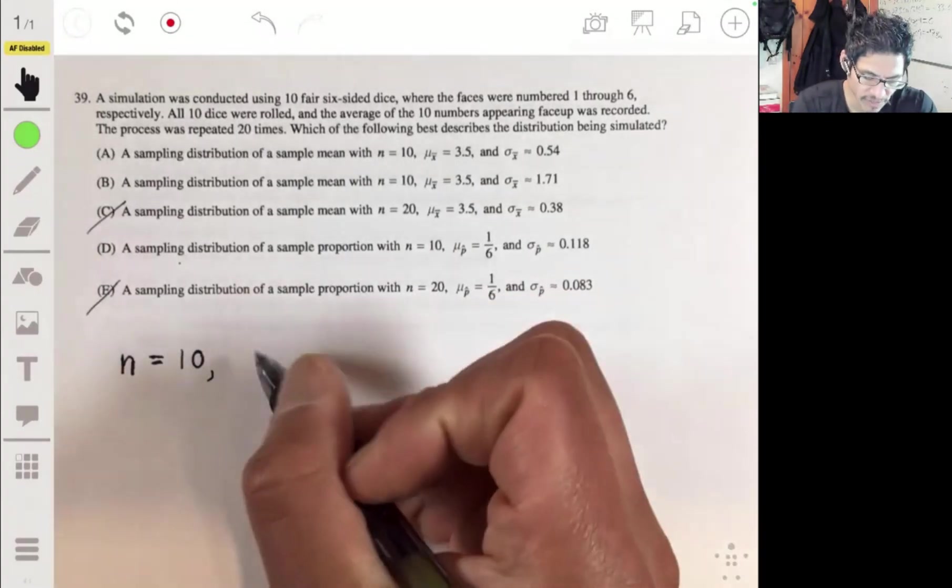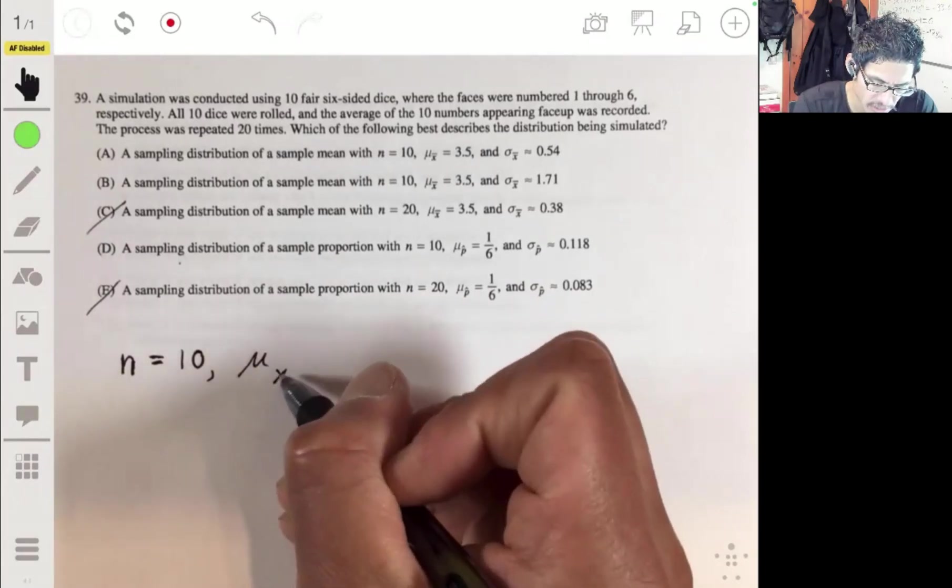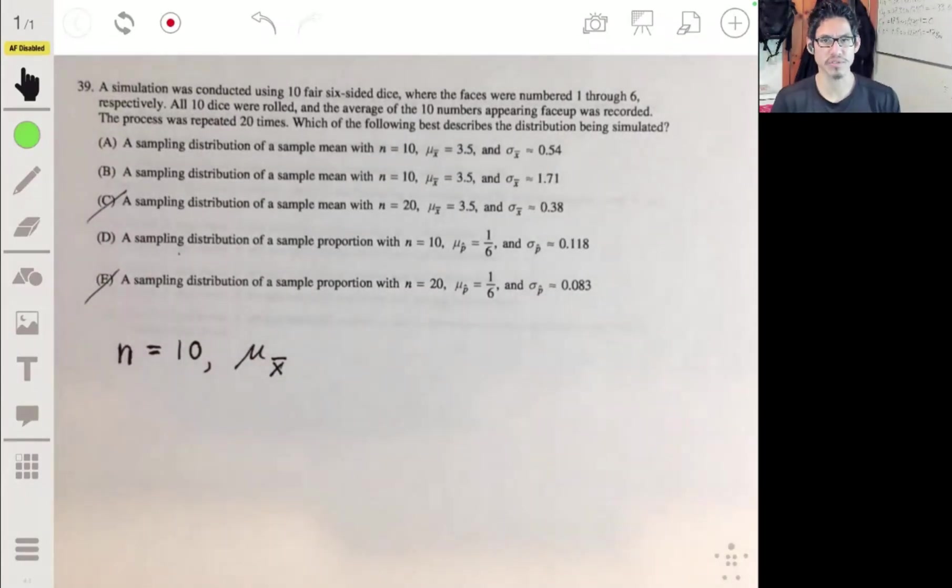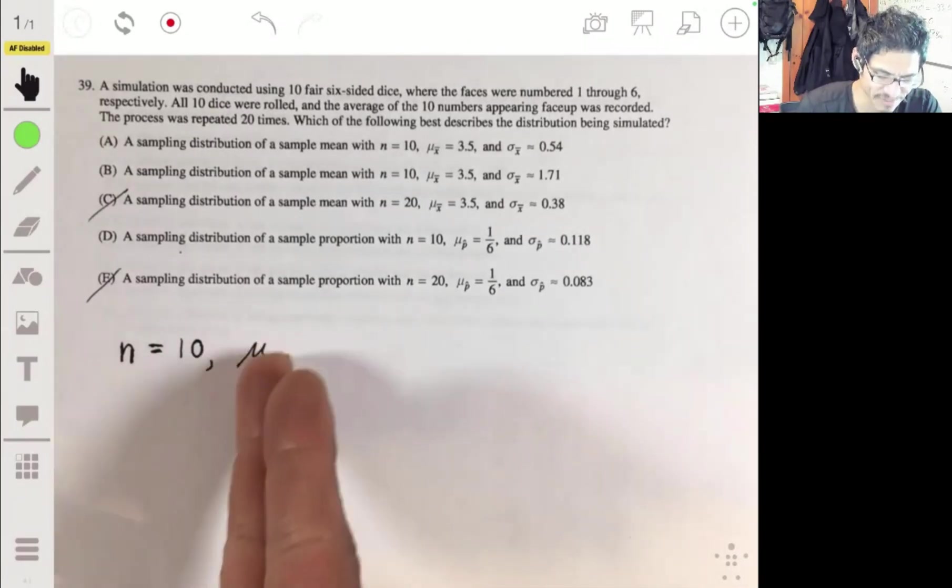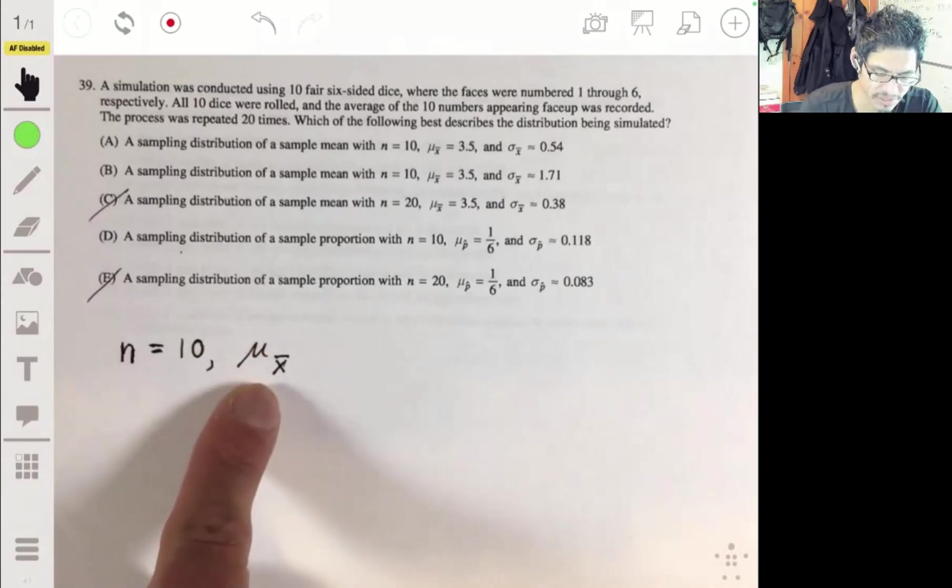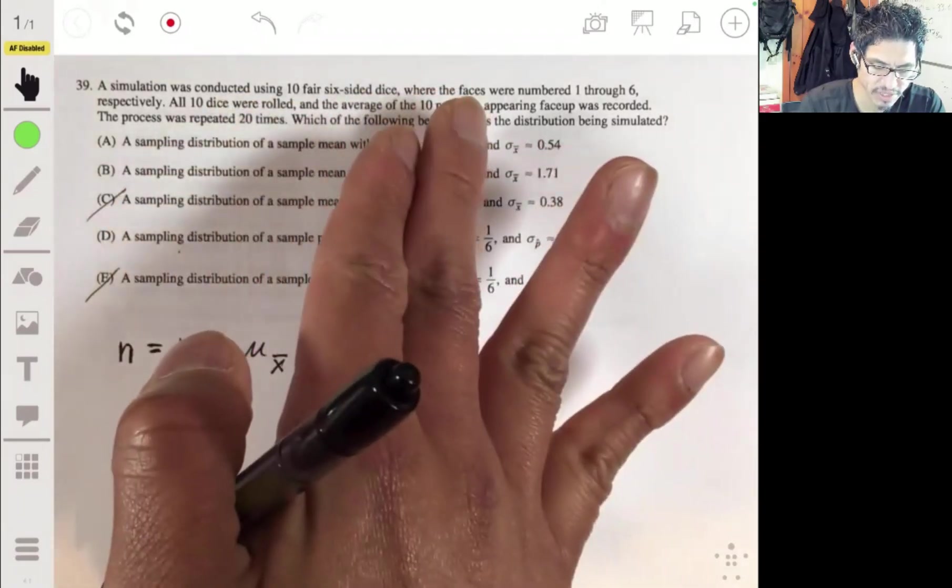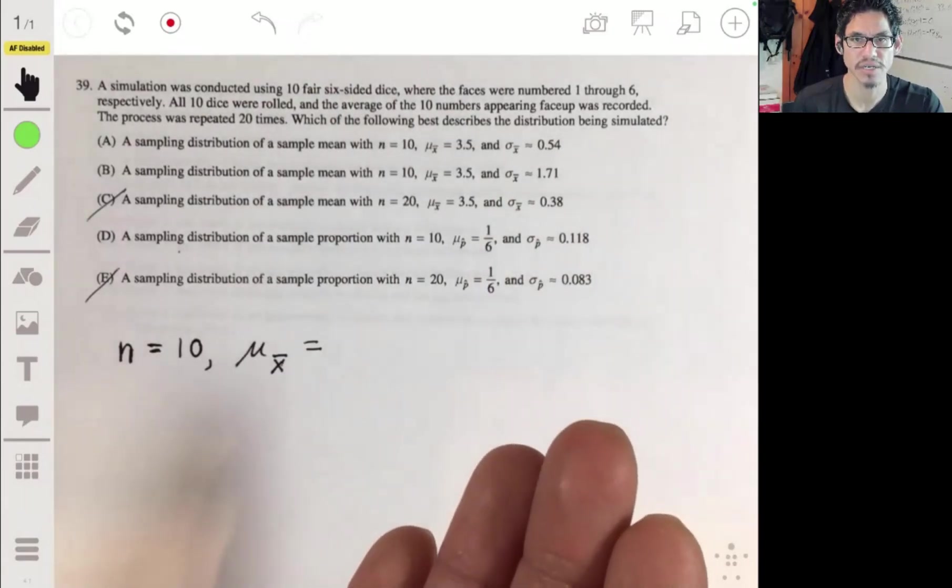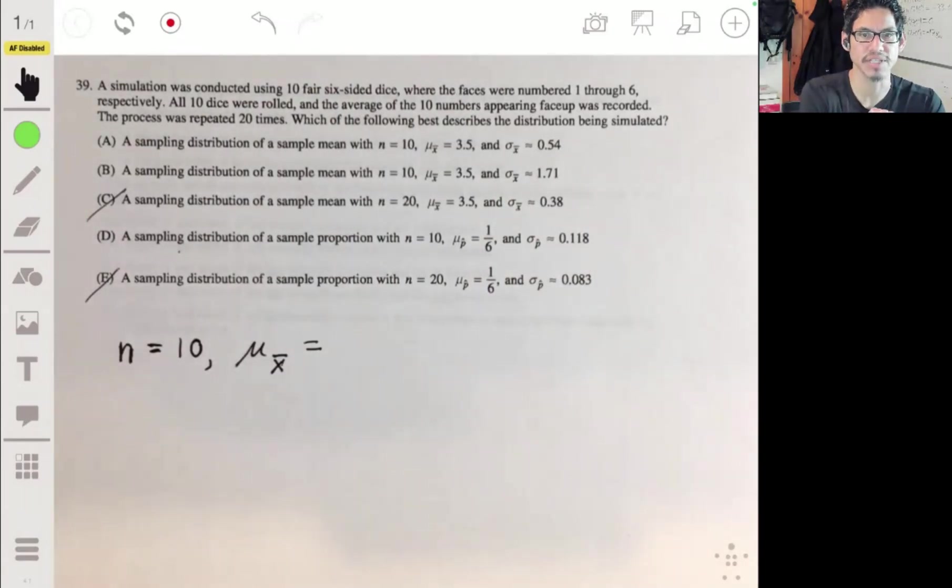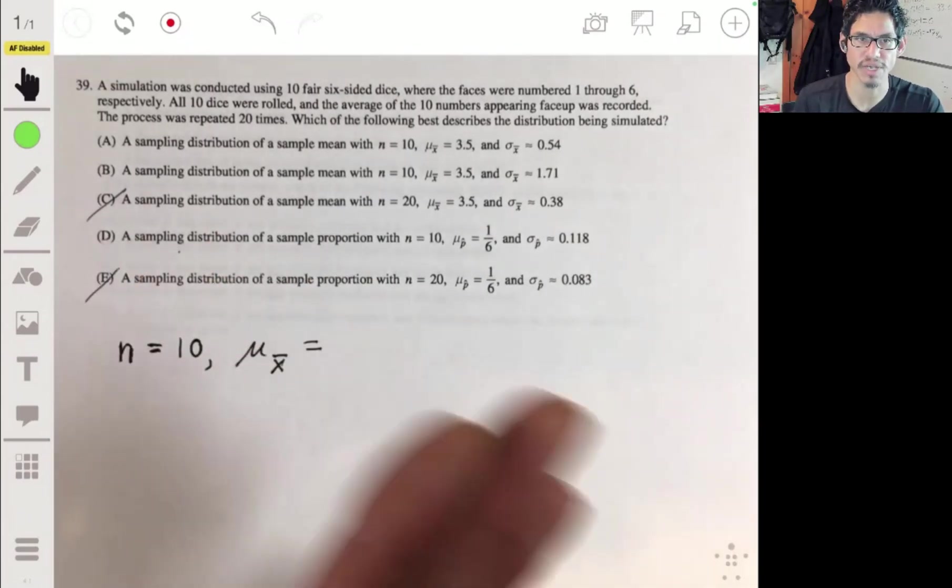We're going to then find the mean of those 10 dice in each of those trials. If you remember from this unit, the mean is an unbiased estimator. This mean is also going to be equal to the population mean. What this is representing is the mean of the sampling distribution of X bar. All we have to do is take the average of 10 dice. That's going to be the same if you roll it 20 times, 50 times, 100 times, because it doesn't matter.